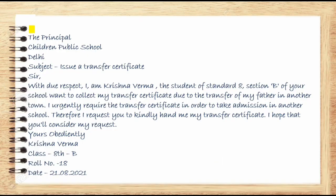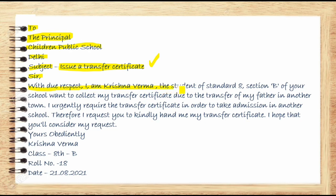सबसे पहले, we write the format. To the Principal, Children Public School, Delhi. Subject: Issue a transfer certificate. As we know, in the subject we write the main object of the application or any letter. Then we write: Sir, with due respect, I am Krishna Varma, the student of standard 8th, Section B, of your school.